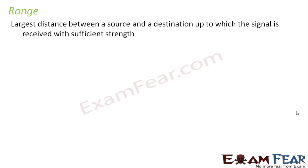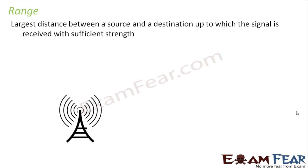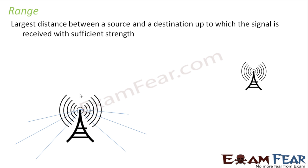The largest distance up to which you can receive the signal with sufficient strength is known as range, and this value changes for different types of signals. For example, a tower has its range up to a certain distance — it can transmit signal with good strength only up to that much distance. That is why telephone towers are present in different localities; each tower has the capacity to transmit with sufficient strength only up to a certain distance.